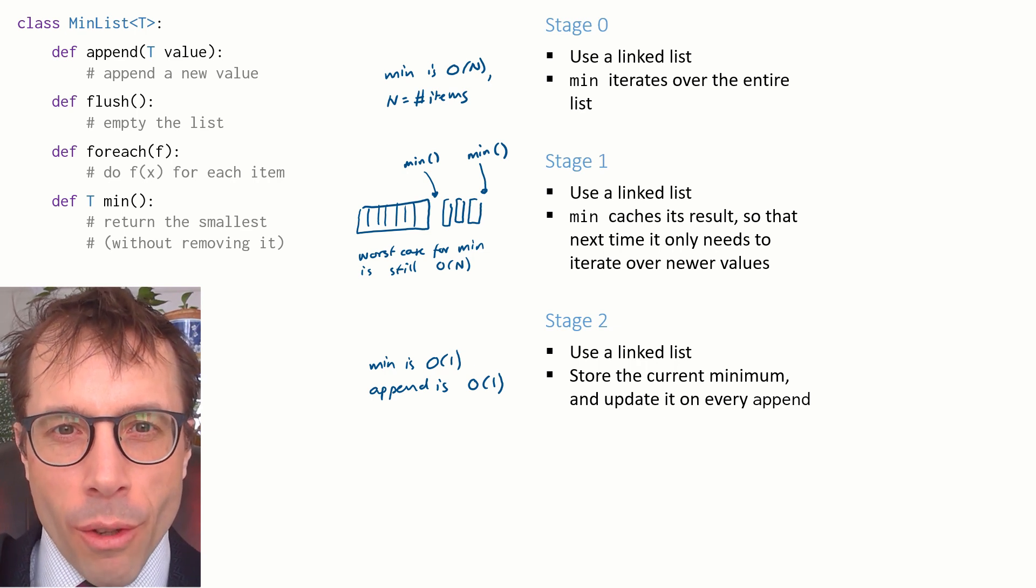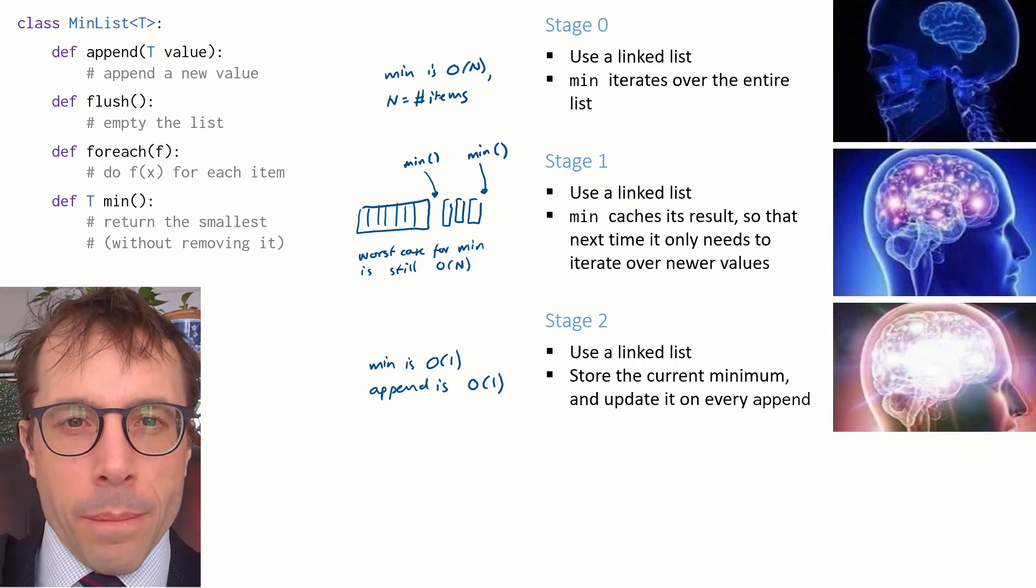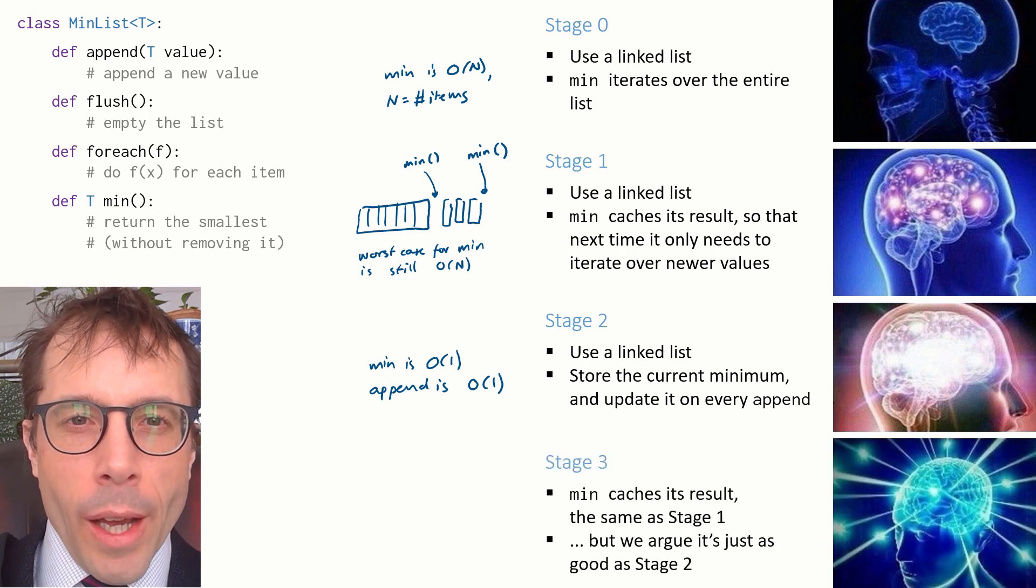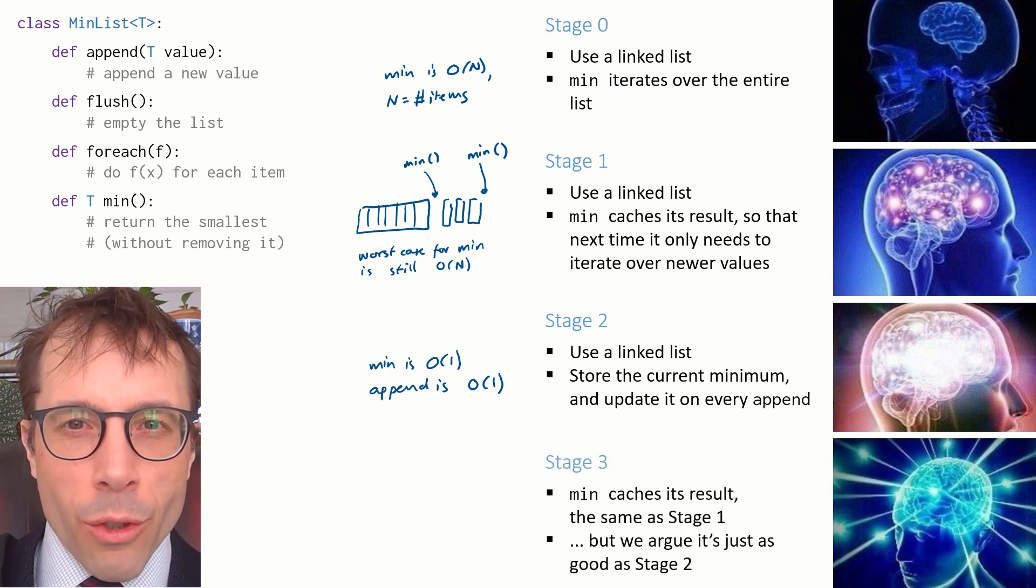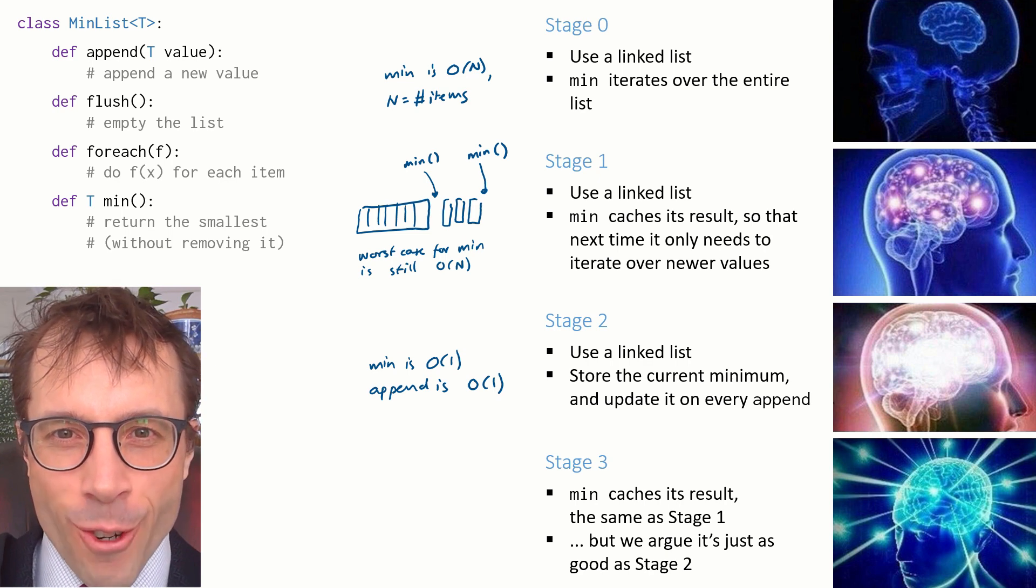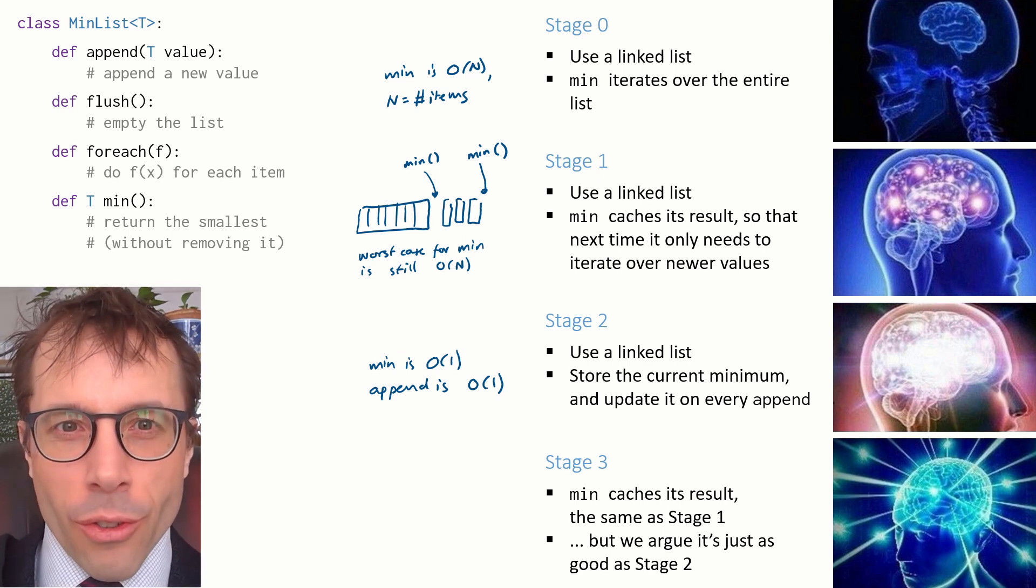So this leads us to the fourth and final stage of enlightenment. Our implementation here is exactly what it was for stage 1, but we're going to argue that its performance is just as good as stage 2.